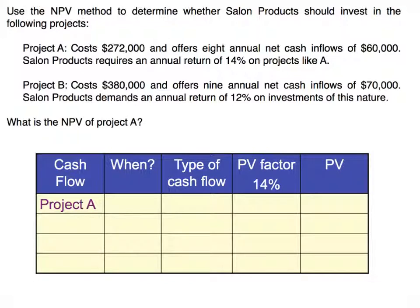Let's look at an example. We're going to use the net present value method to determine whether Salon Products should invest in the following projects. Project A costs $272,000 and offers eight annual net cash inflows of $60,000. Salon Products requires an annual return of 14% on projects like A. Unlike the payback period and the accounting rate of return, which did not incorporate the time value of money, net present value as well as IRR do incorporate the time value of money. We're going to be using our present value factor table to calculate the net present value.